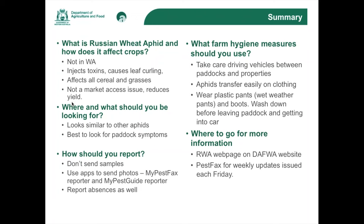Where this occurs overseas, the main method of managing this pest is through breeding resistant varieties. We're hoping we don't have it in WA, but in terms of field surveillance there are a few questions we'll address: what is the aphid, how does it affect crops, what should we be looking for, how should we report, how to avoid transferring this pest between paddocks and properties, and where we can get more information.